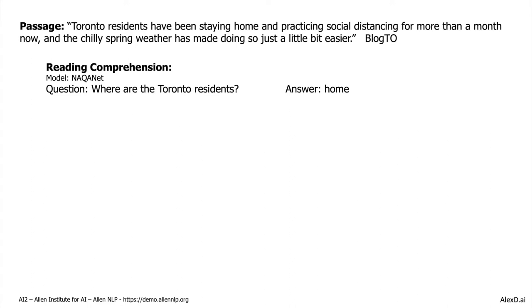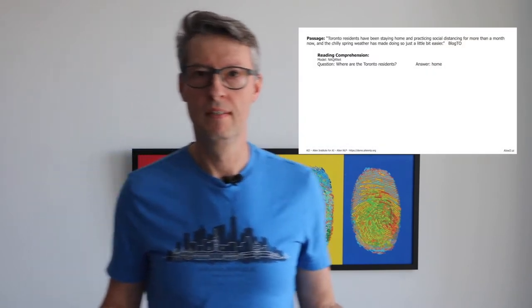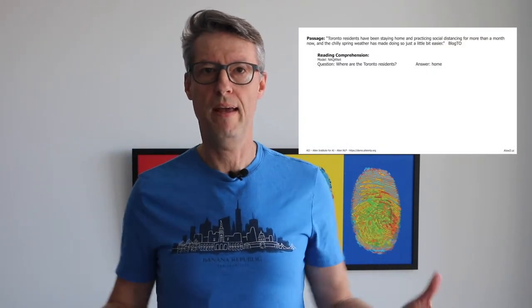Let's see some examples. Look at this passage: 'Toronto residents have been staying home and practicing social distancing for more than a month.' What can you do with this? You can apply reading comprehension — if we ask 'Where are the Toronto residents?', the answer will be 'home.' This is a kind of reading comprehension.